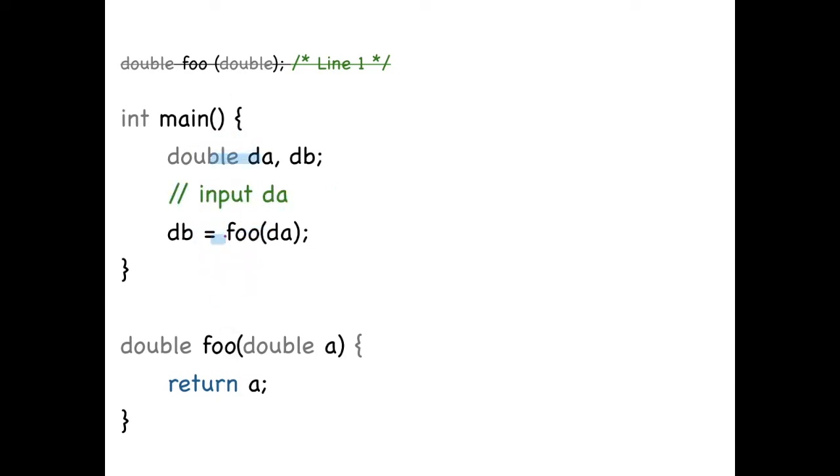And the third line is calling the function foo. Now the declaration is not available. So what does the compiler do?